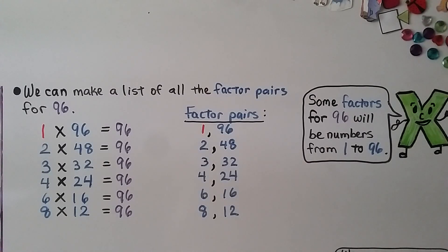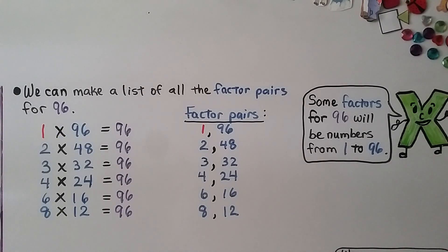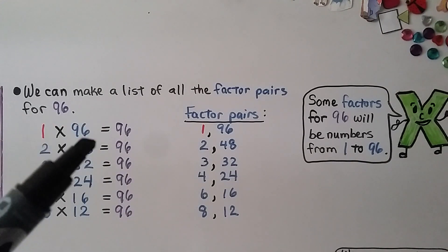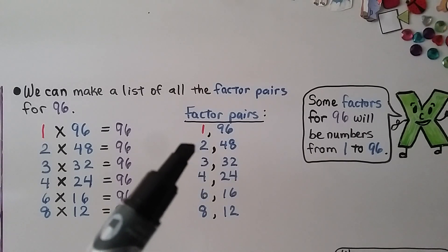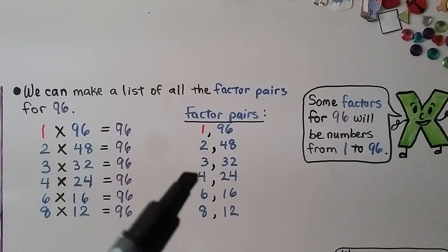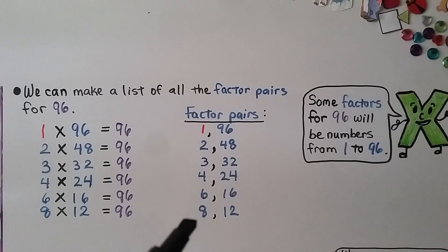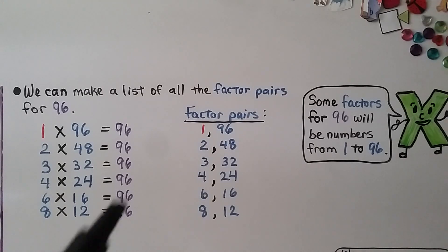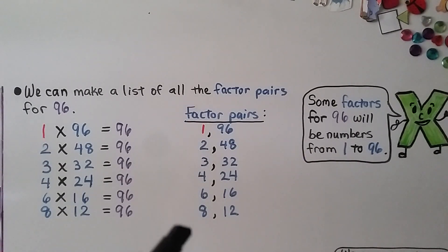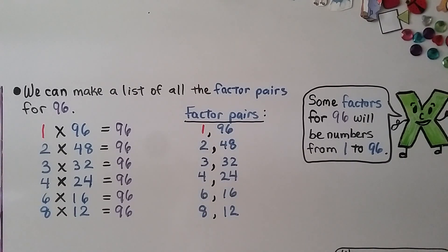We can make a list of all the factor pairs for 96 — all the numbers that, when multiplied together, equal 96. The factor pairs are: 1 and 96, 2 and 48, 3 and 32, 4 and 24, 6 and 16, and 8 and 12. So the factors of 96 are numbers from 1 to 96 that make 96 as a product.